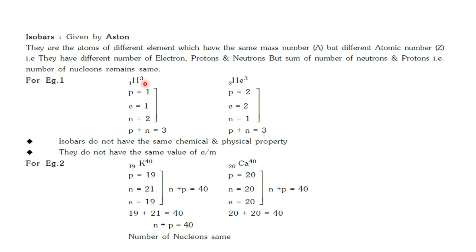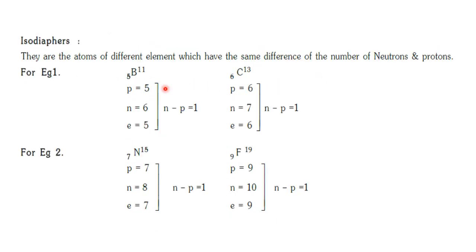For example, hydrogen-3 (atomic number 1) and helium-3 (atomic number 2). If you calculate the mass number — that is the number of protons plus neutrons — both give a total of 3. So they have the same mass number but different atomic numbers: 2 and 1. We call these isobars.